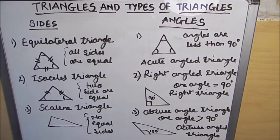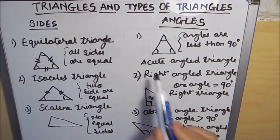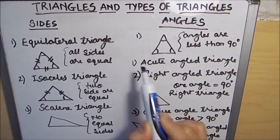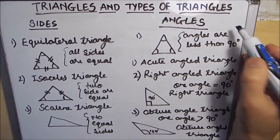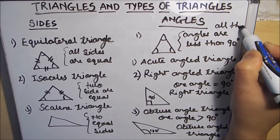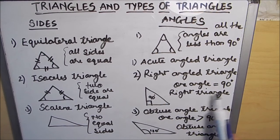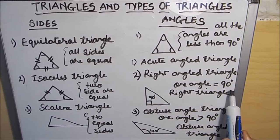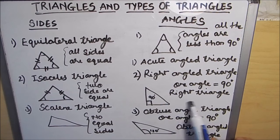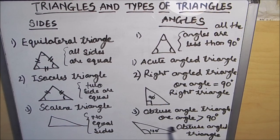According to the angles, triangles are classified as the acute angled triangle in which all angles are less than 90 degrees, the right angled triangle in which one angle is 90 degrees — also called a right triangle — and the obtuse angled triangle in which one of the angles is greater than 90 degrees.